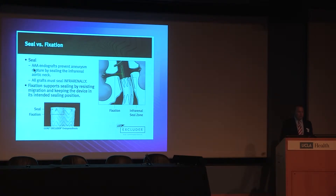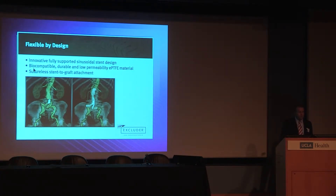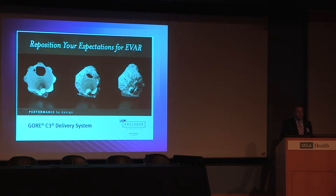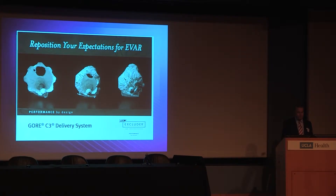The Gore Excluder has a proprietary PTFE sealing ring and uses hooks for seal. They purposely decided not to place suprarenal hooks or barbs — fixation is done entirely infrarenally. The limbs use their proprietary Viabon material, which is very conformable to tortuous anatomy. The repositionability allows the device to be re-constrained and moved cranially or caudally. The device can also be spun if you have difficulty cannulating the gate from the femoral position — very advantageous for difficult aneurysm repair.